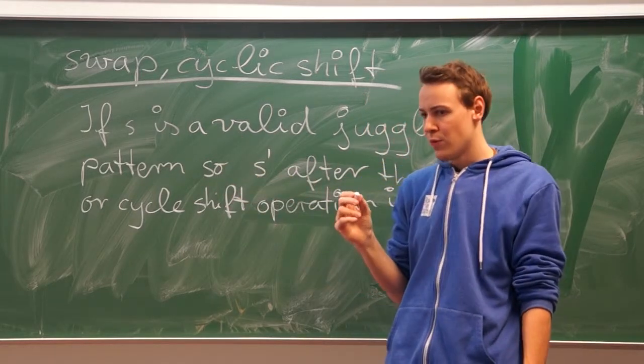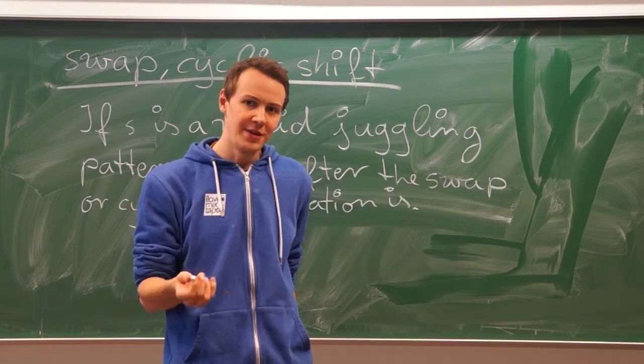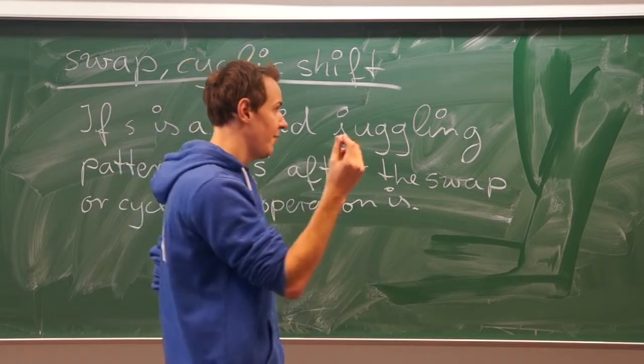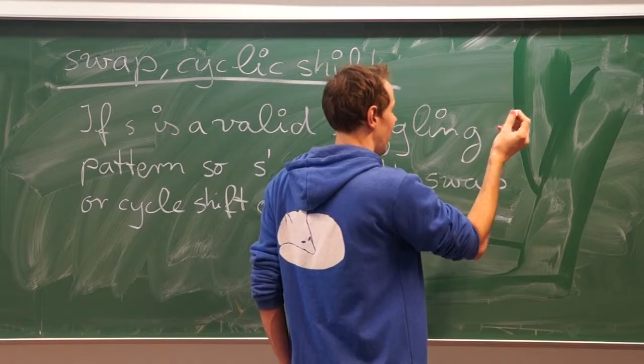When we want to construct new tricks, we have to think about valid tricks we already know. For example, we only know the single-digit siteswaps which are valid at the moment.